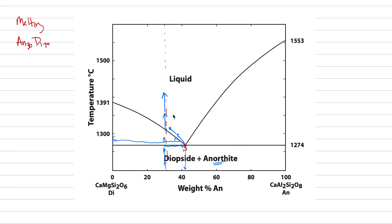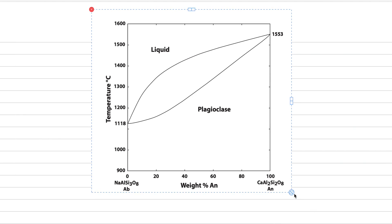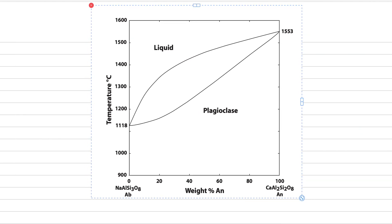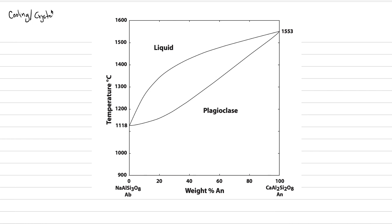It's the exact same process of using the graph to do all the calculations. But that wasn't actually the topic I wanted to cover today. What I want to explain is a totally different phase diagram — a solid solution phase diagram. There are some igneous minerals that form with solid solution: forsterite-fayalite is one example, and albite-anorthite is another. So we're going to do a cooling crystallization sequence of plagioclase solid solution.